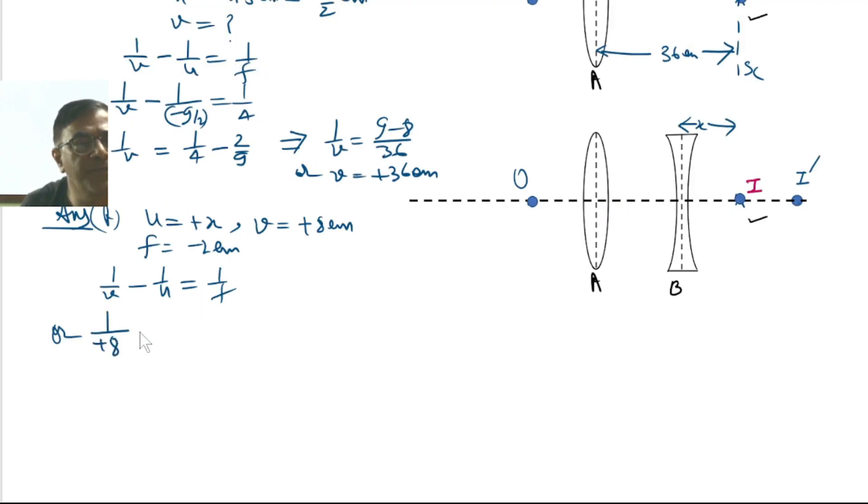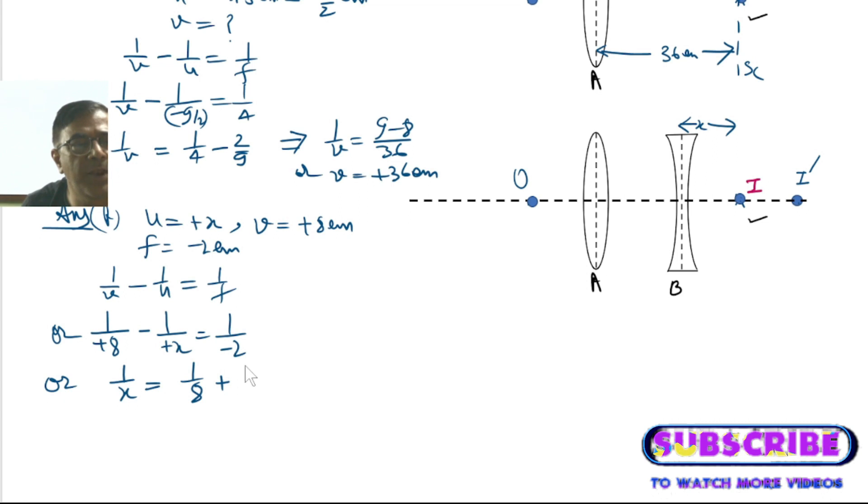1 by plus 8 minus 1 by plus X equals 1 by minus 2. Or 1 by X equals 1 by 8 plus 1 by 2.